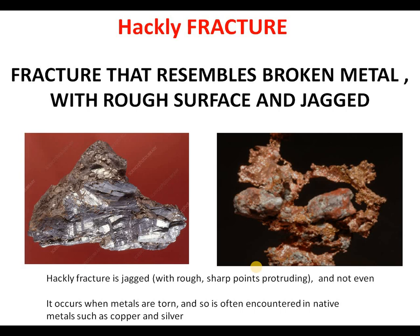Hackly fracture resembles a broken metal with rough surface and jagged edges — meaning rough surface with sharp points protruding. This hackly fracture occurs when metals are torn, and so is often encountered in native metals such as copper and silver. These are the best examples where we can find hackly fracture — rough and sharp points can be seen.